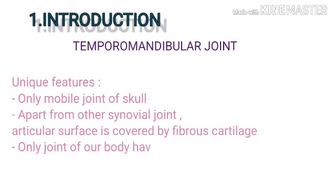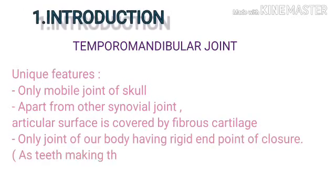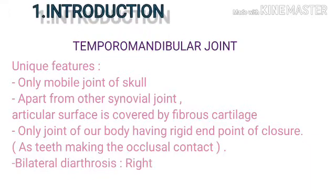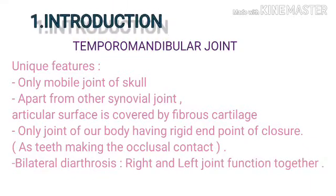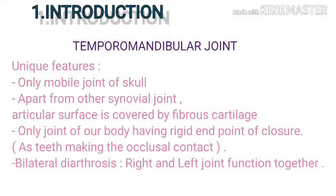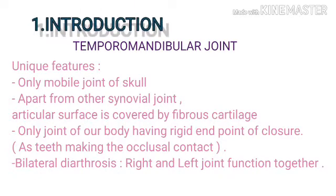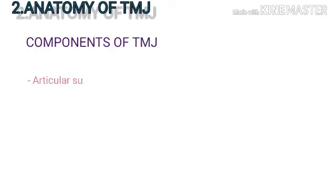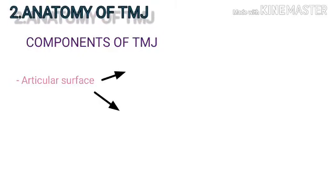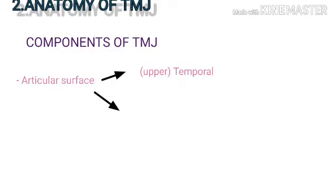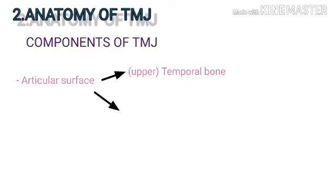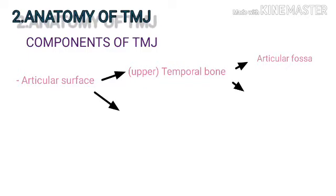Now, the unique features of TMJ: it is the only mobile joint of the skull. Unlike other synovial joints, its articular surface is covered by fibrocartilage. It is the only joint in the body with a rigid endpoint of closure, as the teeth make occlusal contact. It is a bilateral diarthrosis — the right and left joints function together.